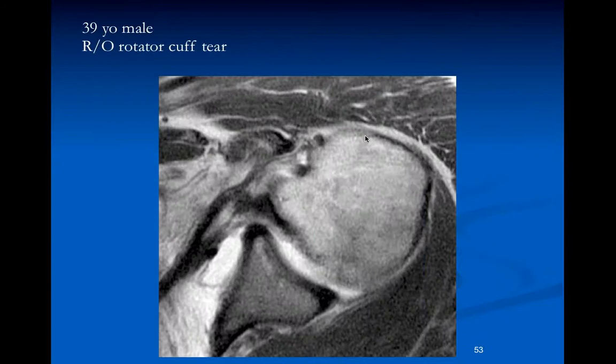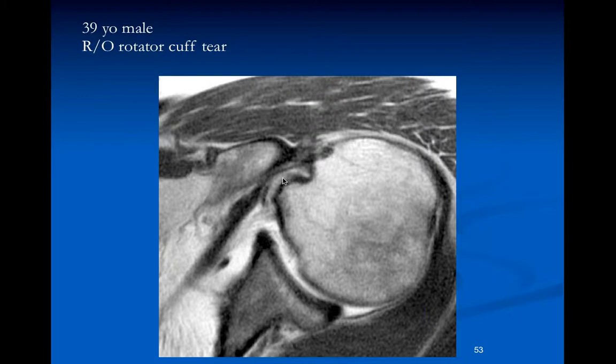You have to be very careful if you're going to use measurements. Here we can see a subscapularis tear with markedly decreased space between the coracoid process and the lesser tuberosity - in large part because there's a big partial tear of the subscapularis tendon. That's only five millimeters in that individual.